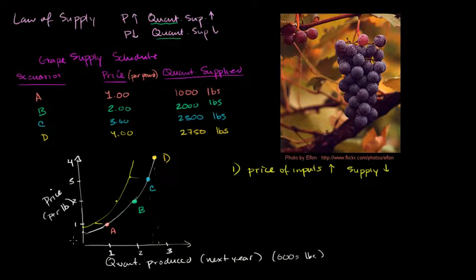And likewise, if my price of my inputs went down, now all of a sudden, at any given price point, producing grapes would become more profitable, and I would have more incentive to maybe produce grapes relative to other things, and use more land for grapes than other things, and then you would have the whole curve shift to the right.